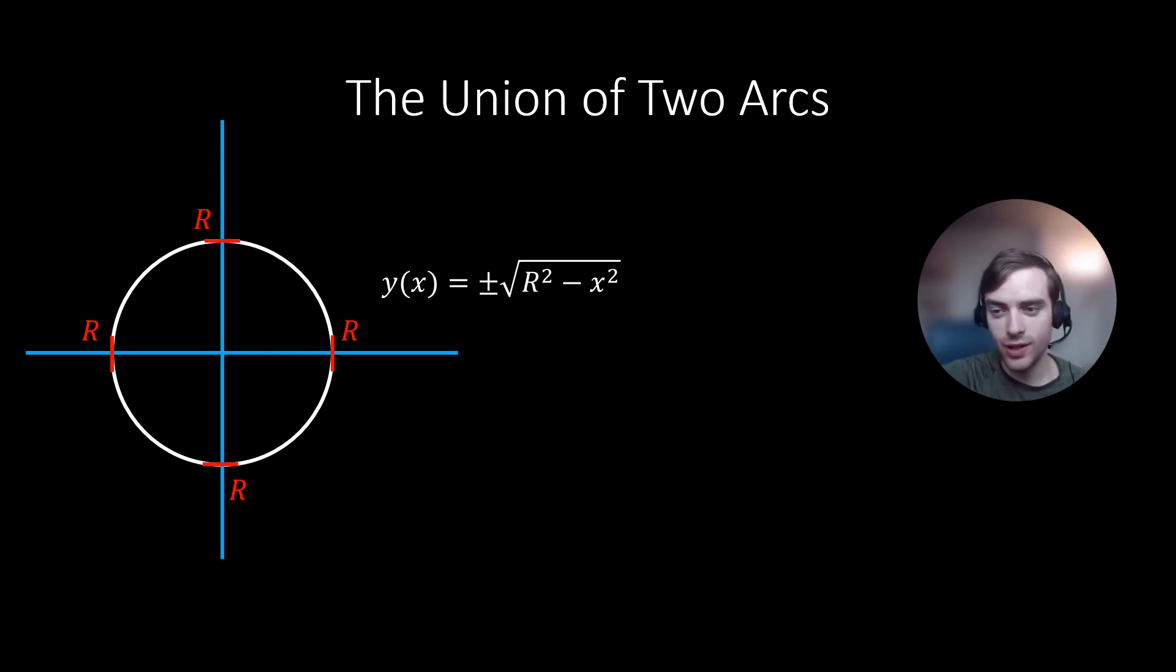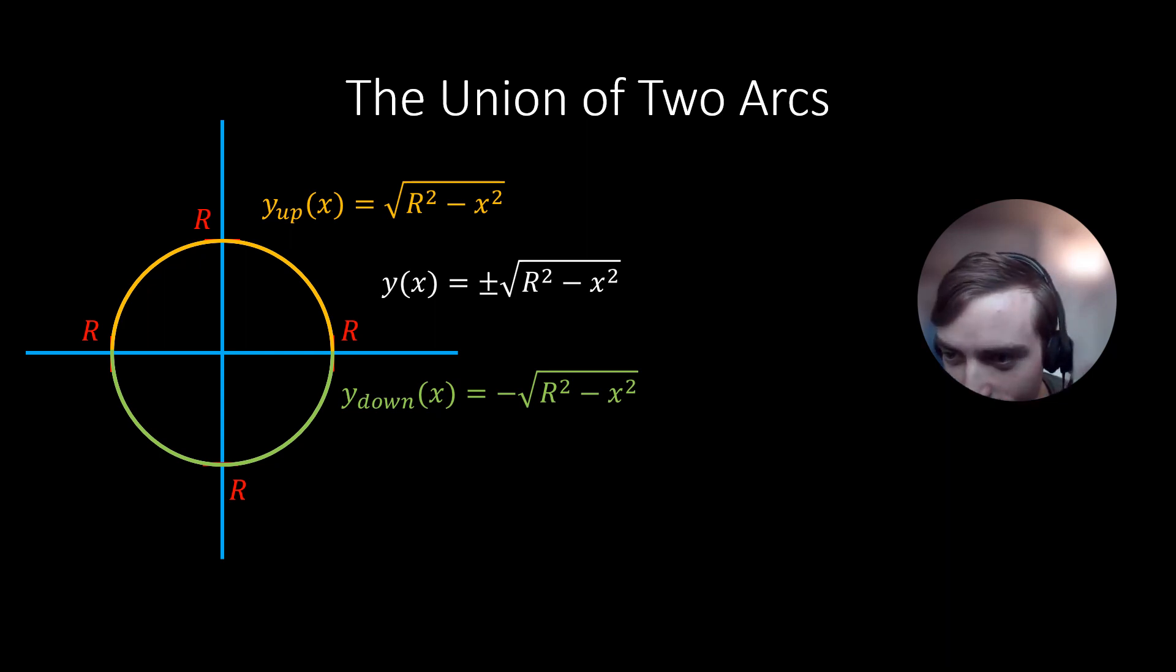So what we're going to do is that we're going to break it down into subsets that we will call y_up and y_down. Y_up, in orange right there, represents the top part of the circle, and y_down represents the bottom part of the circle.